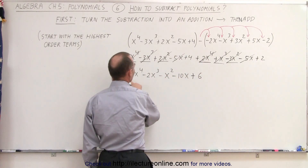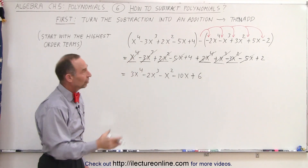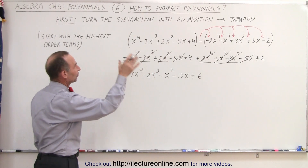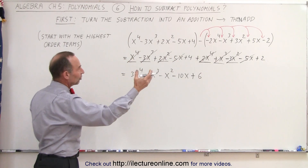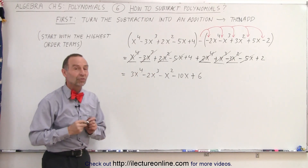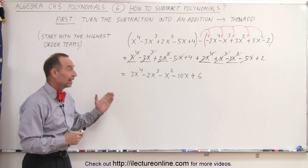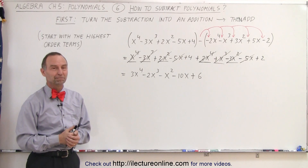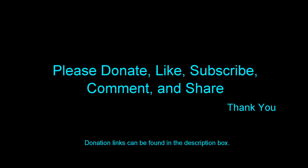And now we have the result of the subtraction — the second polynomial subtracted from the first one. We turned it into an addition, we added our like terms, and that is the result of that subtraction. That is how it's done. Thank you.